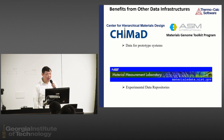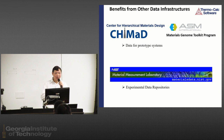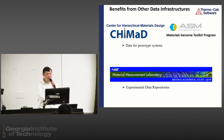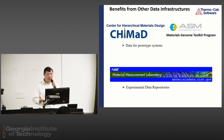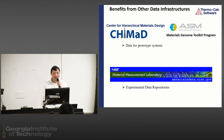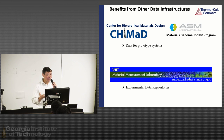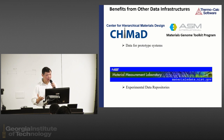We hope to benefit from other data infrastructures. For example, CHiMaD — the Center for Hierarchical Materials Design — is partnered with some materials and ACMGI toolkit programs. What we really emphasize is that it can generate prototype system data — that's what we really need. We actively participate in this program, providing our software to users, and they can generate prototype data for us to use to develop our databases. Other data sources we are interested in are data repositories — for example, from NIST — which have experimental data repositories, especially for diffusion, thermodynamics, and mechanical properties databases. That's what we really need, and hopefully the colleagues here can help us with this data.